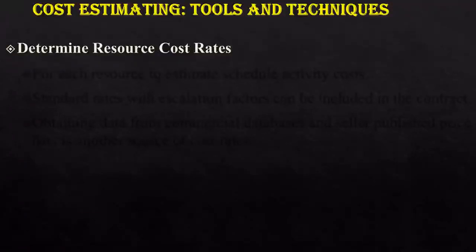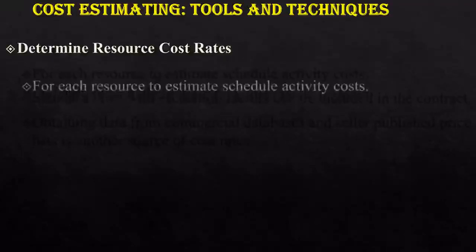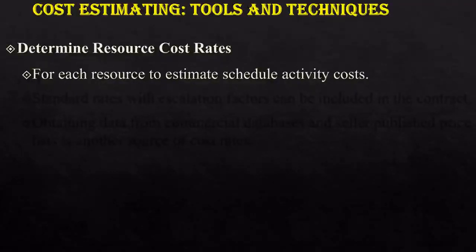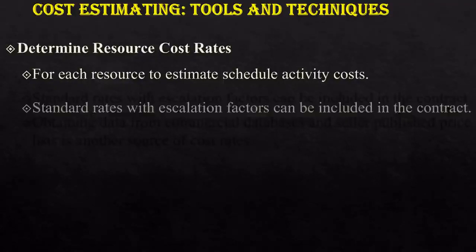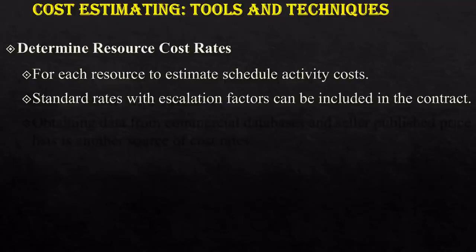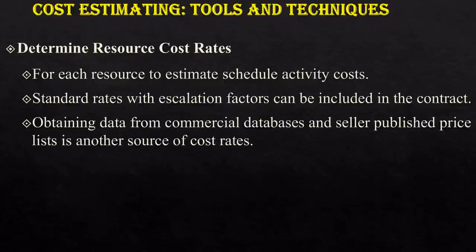Now, determination of resource cost rates — how can you determine the cost rate of resources? For each resource to estimate schedule activity cost, resources may be men, material, machine, money, etc. Standard rates with escalation factors can be included in the contract. Obtaining data from commercial databases and seller-published price lists is another source of cost rates. You can get cost rates from governmental databases or published seller price lists.